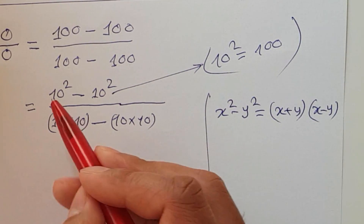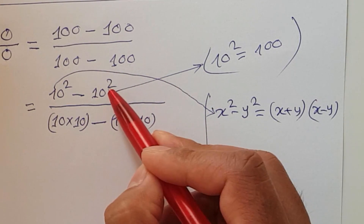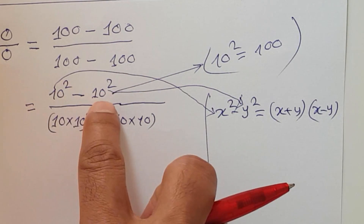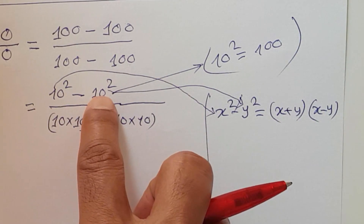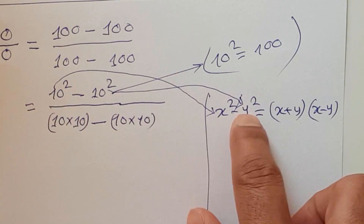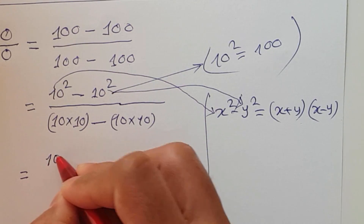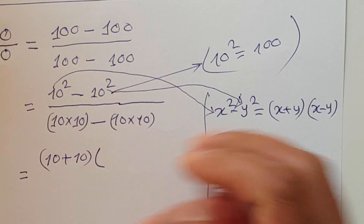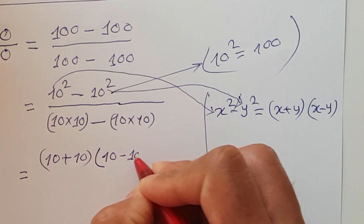So here, this 10 is x and this 10 is y. x squared minus y squared equals x plus y times x minus y. If we apply this formula, the numerator becomes 10 plus 10 times 10 minus 10, and the denominator also becomes 10 plus 10 times 10 minus 10.